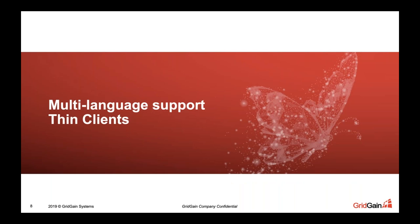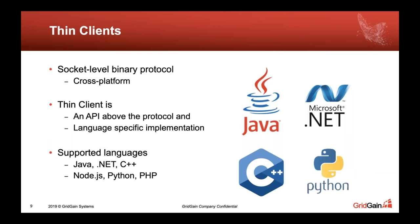Let's move on and talk about the multi-language support — thin clients. The way these work is at the socket level; it's a binary protocol. This approach has a number of advantages because it means it's more lightweight and can be implemented much faster, since there's a specification for this. Additional language support can be developed much, much faster. That's helpful because people want to use modern languages such as Go or Python for data science work. Developing much larger so-called thick clients takes time and is quite an engineering challenge. A thin client is an API above the protocol and language-specific implementation. I'll show you a little bit of Node.js running in a moment.